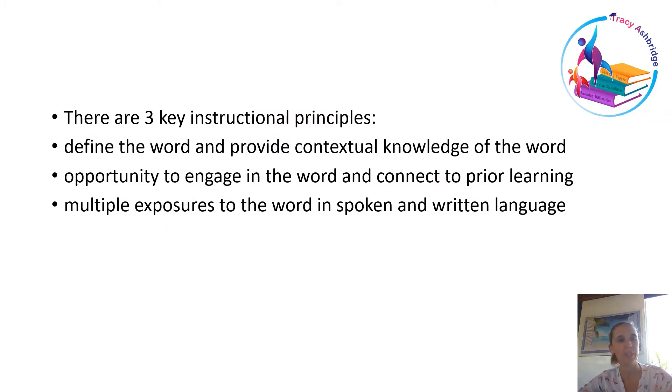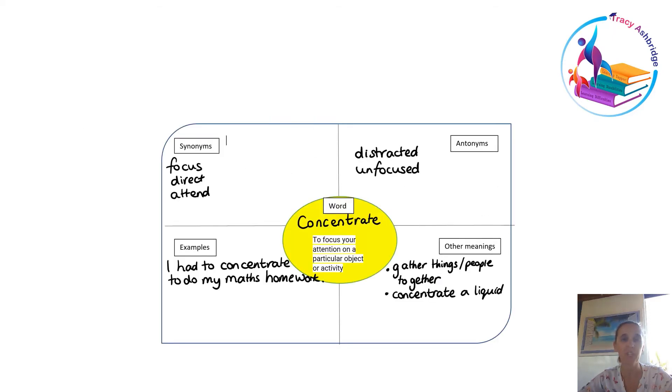There are three instructional principles we need to think about when teaching vocabulary. We need to define the word and give some contextual knowledge. We need to give children the opportunity to engage with the word—to say it, practice it, put it in sentences, and talk to their friends using it. Then we need to do that again in multiple exposures over multiple days and weeks in both spoken and written language to make sure those words are really put into their long-term memory.